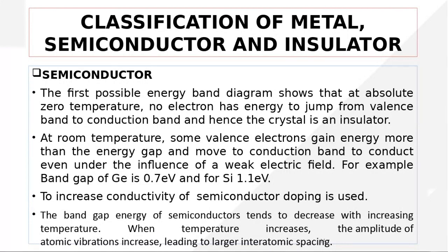We can take silicon and germanium as examples of semiconductors. The band gap of germanium is 0.7 electron volt and for silicon it is 1.1 electron volt. Electrons can move from the valence band to the conduction band at room temperature. However, a problem with these semiconductors is that we have not talked about any impurity — they are pure crystals, intrinsic semiconductors.